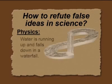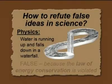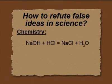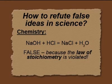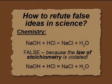Let me give another example in physics. Water is running up and falls down in a waterfall as you see here in the picture. Is it possible or not? It is false because the law of conservation of energy is violated, so it is an impossible process. Or another example from chemistry: you see an equation of reaction and the equation is also false because the law of stoichiometry is violated. You see in the equation H3O, and the right equation must be H2O.